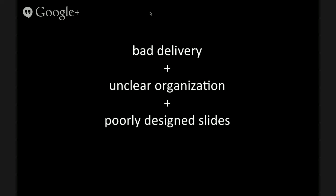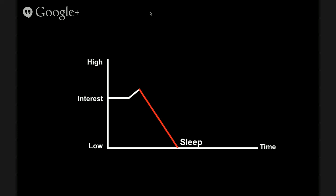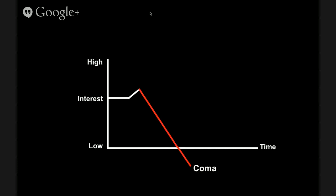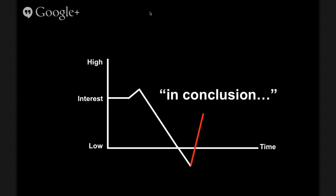So why does that happen? Usually it's because of bad delivery, unclear organization, and very poorly designed slides. To me, that's the trifecta of terrible talks. And on and on the speaker drones on — until we hear the two magic words: 'In conclusion.' Unfortunately, this isn't too far from the truth. The trifecta of terrible talks: bad delivery, unclear organization, and poorly designed slides.